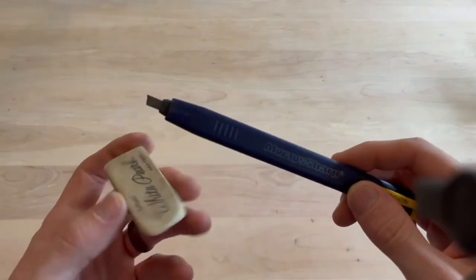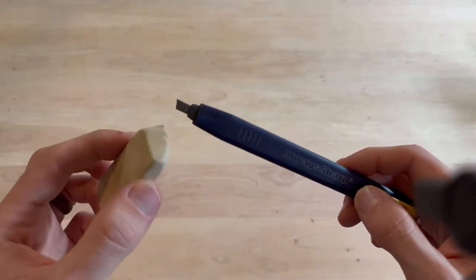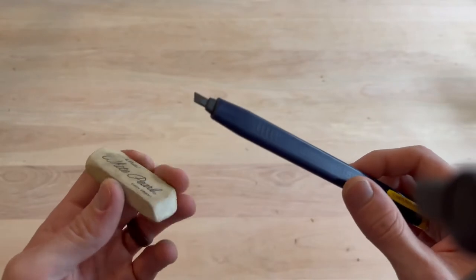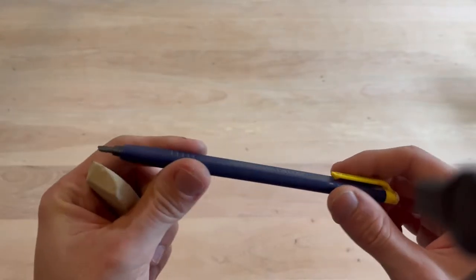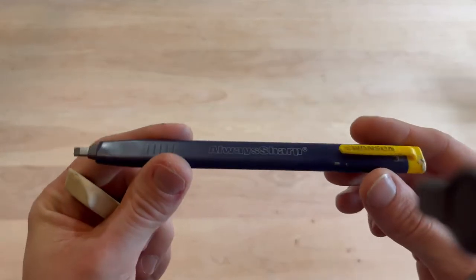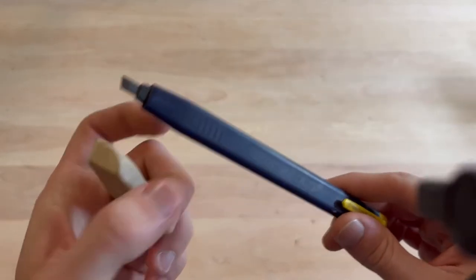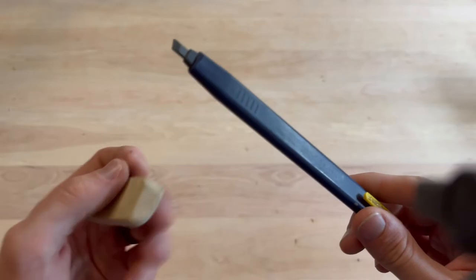In conjunction with this pencil I just use an eraser. I carry this around with me in my tool apron or keep it in my tool bag. If I need to erase a mark, say if I'm making some marks on a wall to hang some pictures, I can just easily grab this and wipe it away.